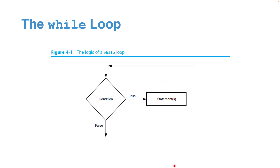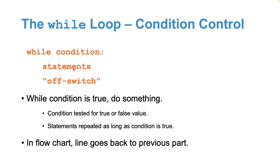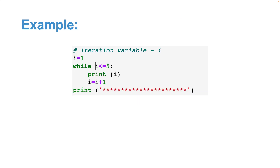Let's go through some simple examples to see how it works. The general syntax for a while statement is: 'while condition:' followed by an indented block of statements — very similar to the conditional structure. For example, imagine we set a variable i to one, and then say: as long as i is less than or equal to five, print i.